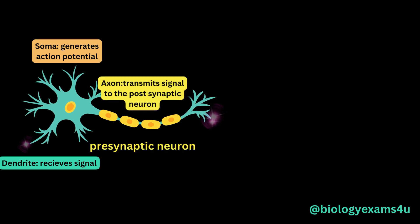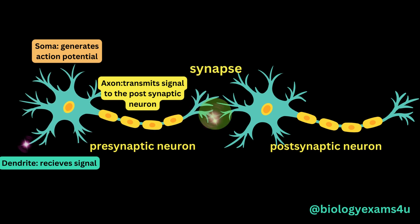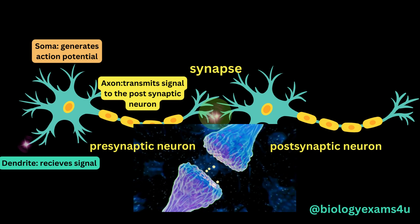When one neuron wants to share a message with another, it sends an electrical impulse created by movement of ions, called an action potential. This impulse moves through the axon until it reaches the axon terminal at the end of the axon.